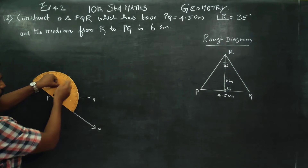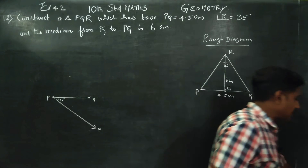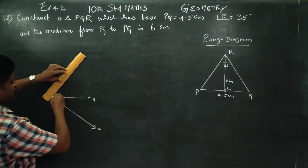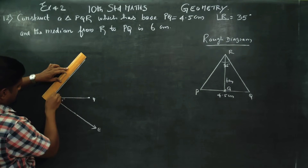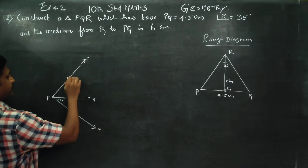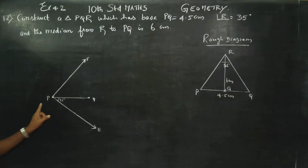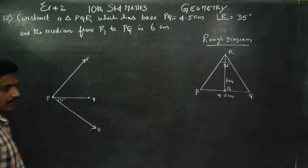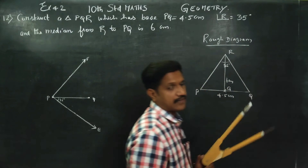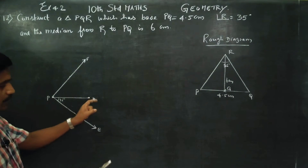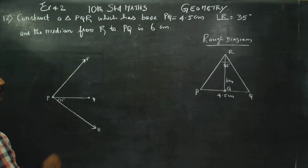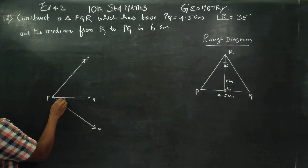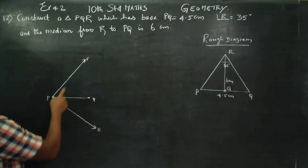From the protractor, scroll down to 90 degrees and mark a point at 90 degrees — this gives a 90-degree angle. Step 1: Draw PQ of 4.5 cm. Step 2: Draw angle QPE of 35 degrees. Step 3: Draw angle EPF of 90 degrees.